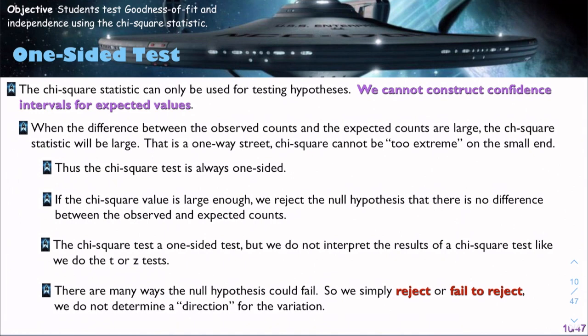Again with this one-sided test, the chi-squared statistic can only be used for testing hypotheses. We cannot construct confidence intervals for expected values. When the difference between the observed counts and the expected counts are large, the chi-squared statistic will be large. That is a one-way street. Chi-squared cannot be too extreme on the small end. Thus, chi-squared is always one-sided. If the chi-squared value is large enough, we reject the null hypothesis that there is no difference between the observed and expected counts.